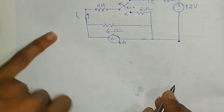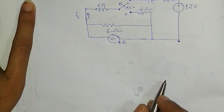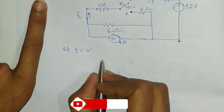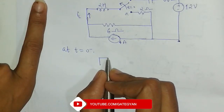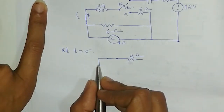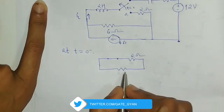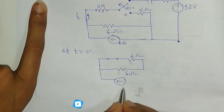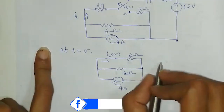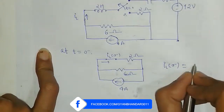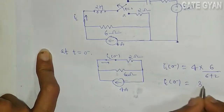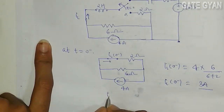First of all, I will find the inductor current at t equal to 0 minus, which is at position A. At t equal to 0 minus, the inductor will get short circuited as it is in steady state with the source. The values are 6A and 4A current sources. IL of 0 minus will be 4 into 6 upon 6 plus 2, giving IL of 0 minus equal to 3A, and this will also equal IL of 0 plus.